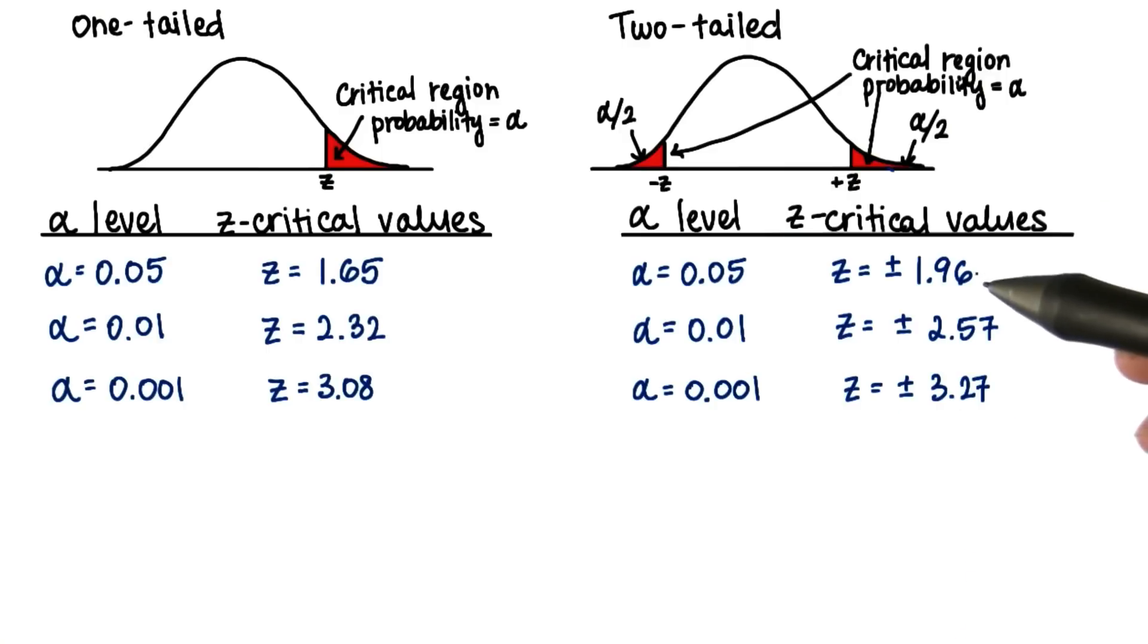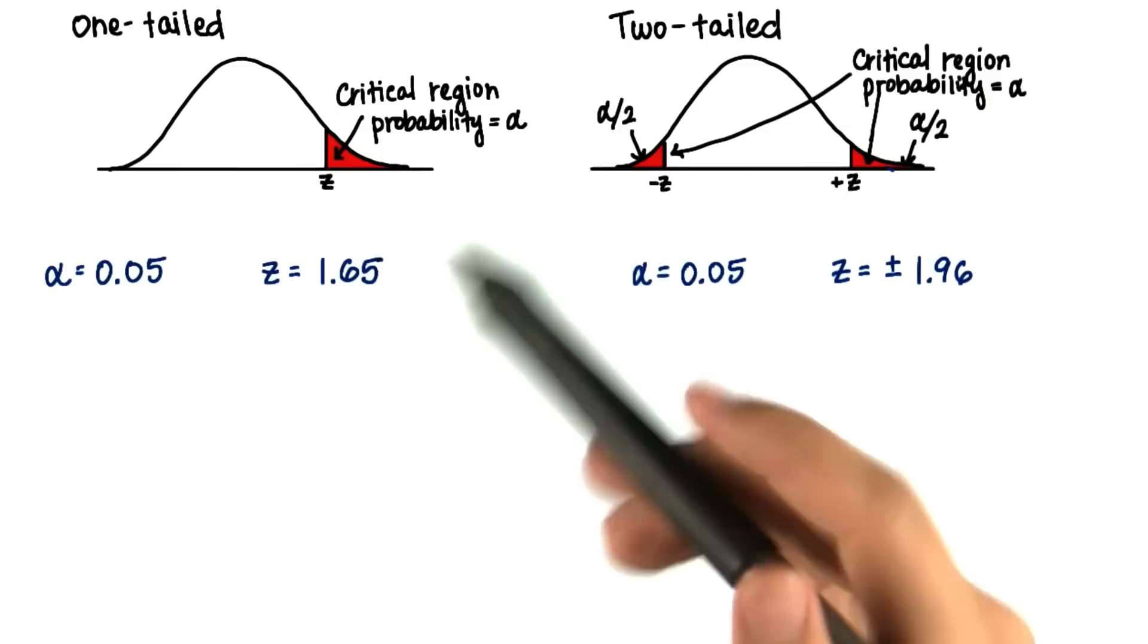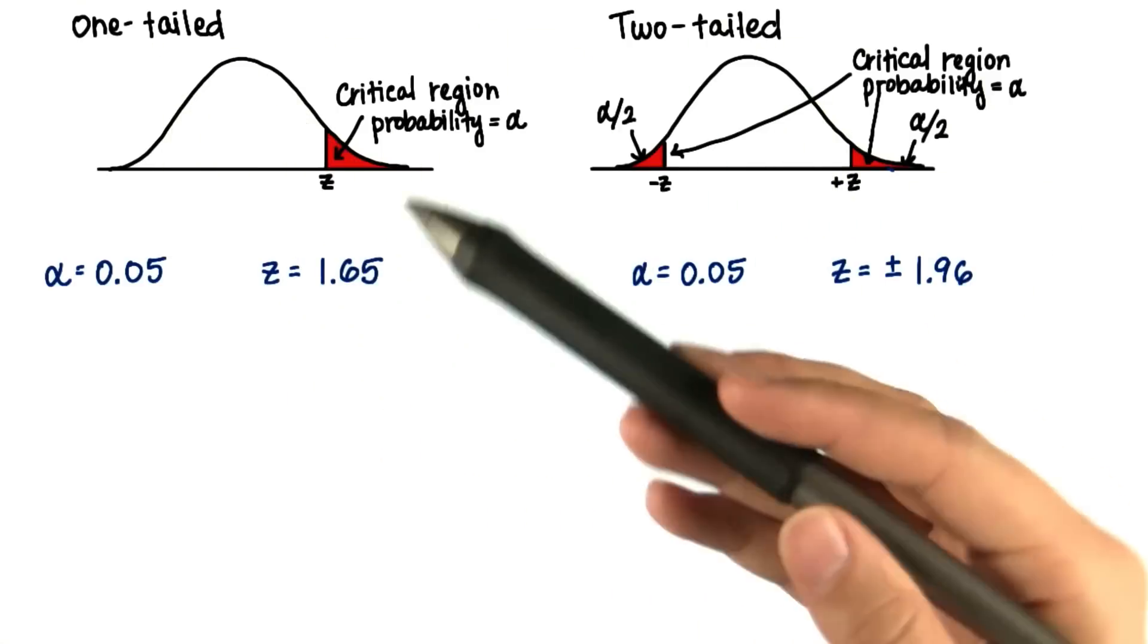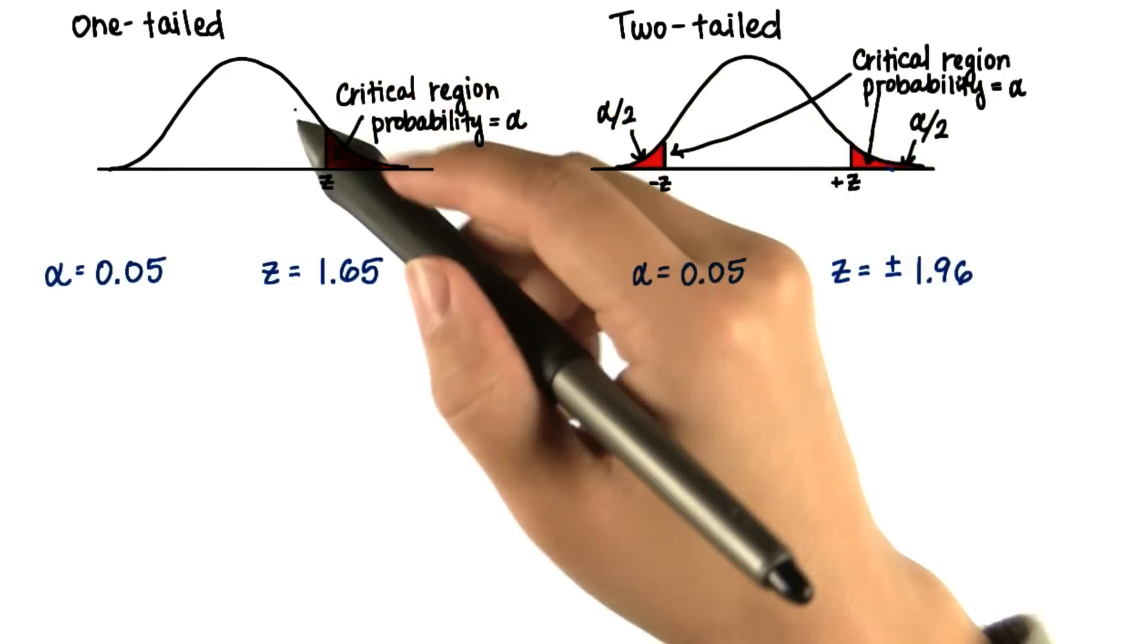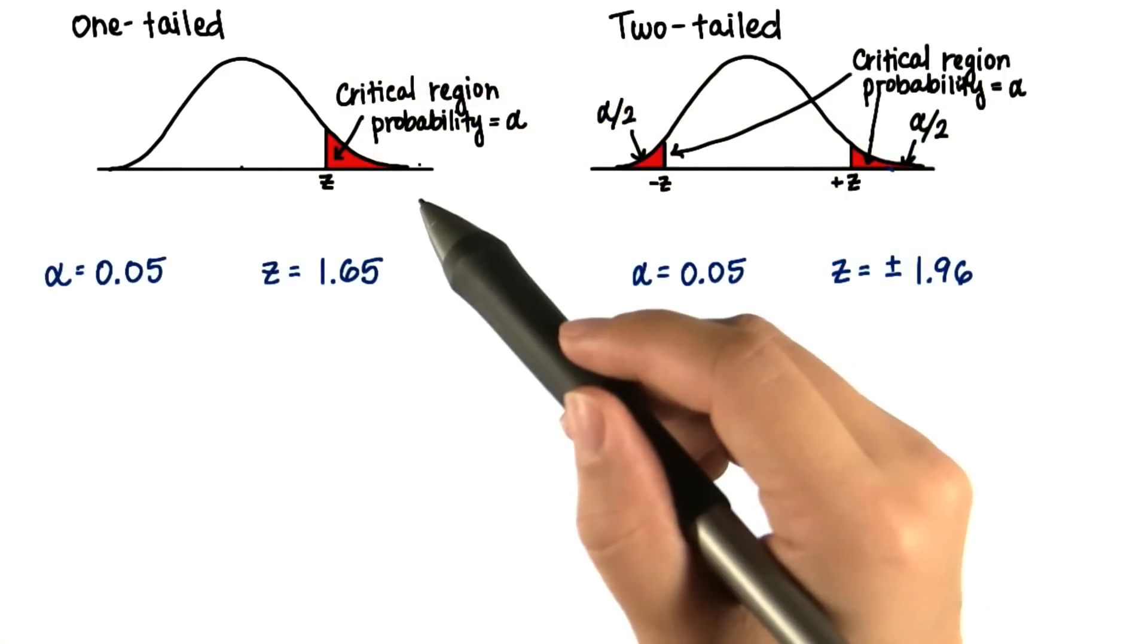Usually, we're going to stick with an alpha level of 0.05. At an alpha level of 0.05, we have two possible outcomes in either situation, one-tailed or two-tailed. Either the sample mean will lie outside of the critical region, or inside the critical region.